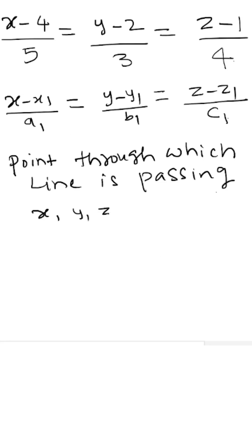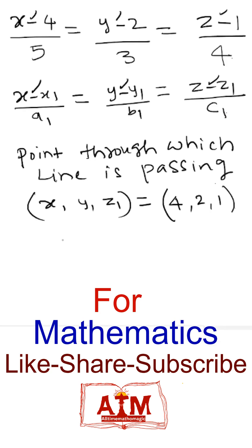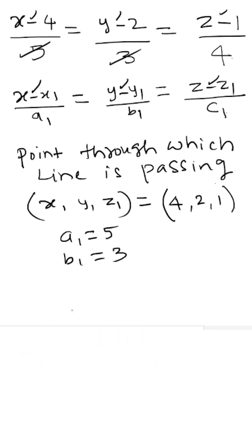While finding the coordinates of the point through which the line is passing, note that there is a minus sign in each term. So the coordinates of the point through which the line is passing are (4, 2, 1), and the direction ratios of the line are: a1 = 5, b1 = 3, and c1 = 4.